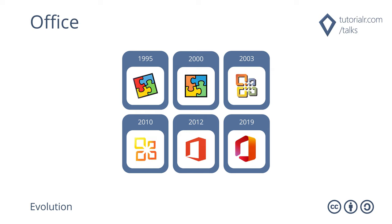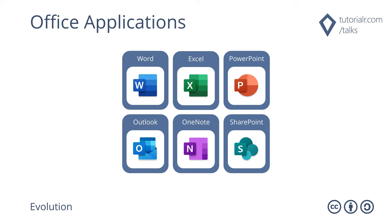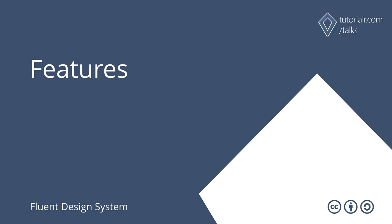Microsoft Office has changed its icon as well as the look and feel over the years, with the jigsaw puzzle look of 1995 slowly becoming more modern and abstract. The modern design language in 2012 brought a brand new icon for Microsoft Office, which has evolved into the current icon in 2019. Microsoft Office applications such as Word, Excel, PowerPoint, Outlook, OneNote, SharePoint and more have had updated icons and look and feel, allowing for a common design across all platforms including web, desktop, tablet and mobile using the Fluent Design System.